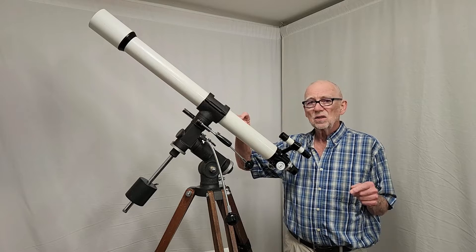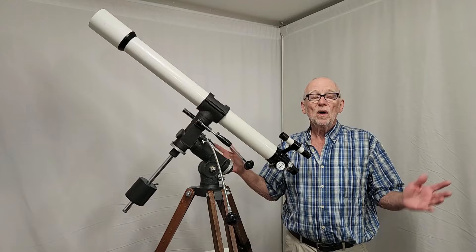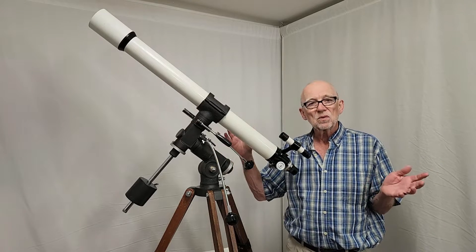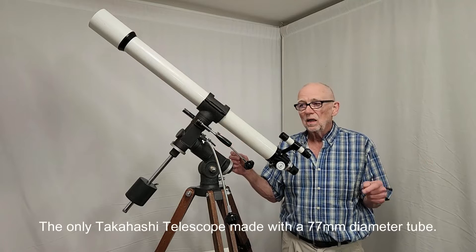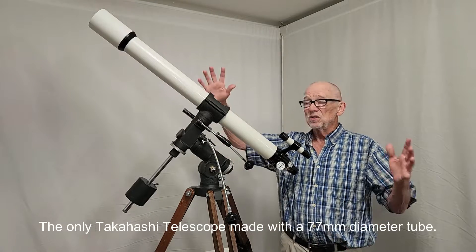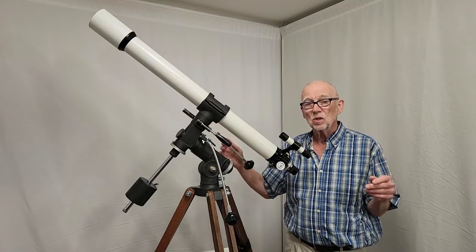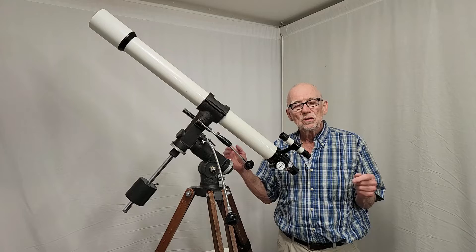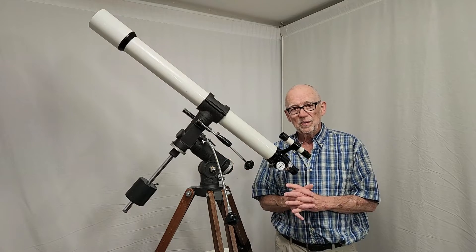This is a large telescope, this is a 77 millimeter tube diameter. Why did Takahashi make the tube diameter 77 millimeters? It's unnecessary. It seems like overkill. It's also on a gigantic mount. You can see this thing is a monster and it's just a huge telescope. I believe that was meant to again introduce shock and awe into their competitors.